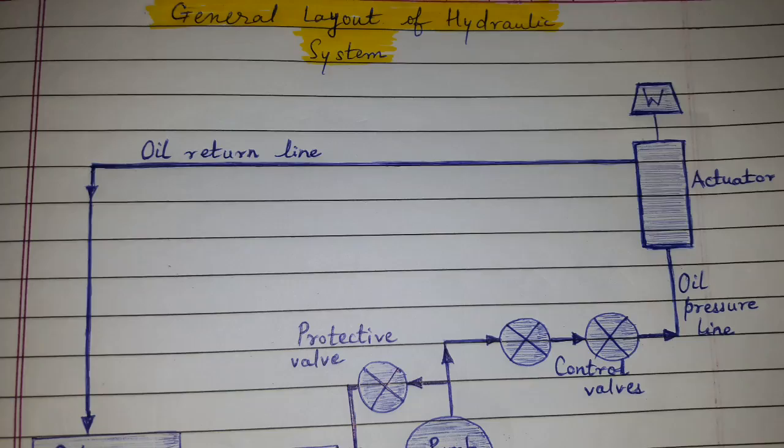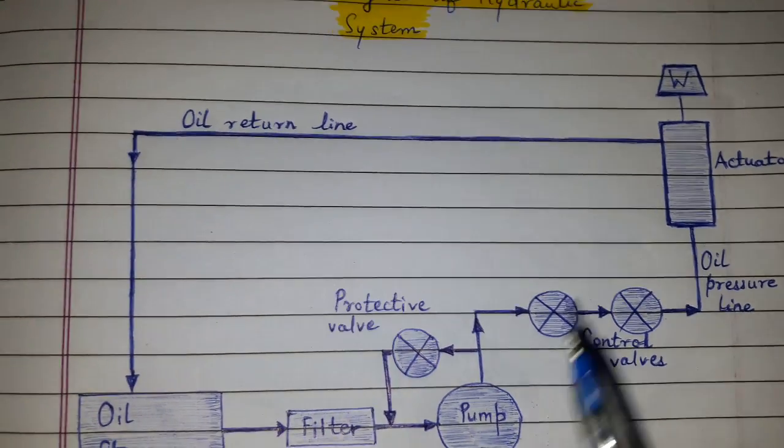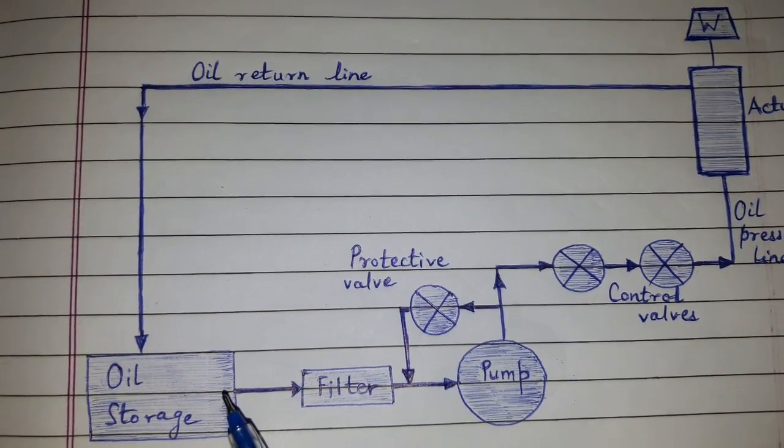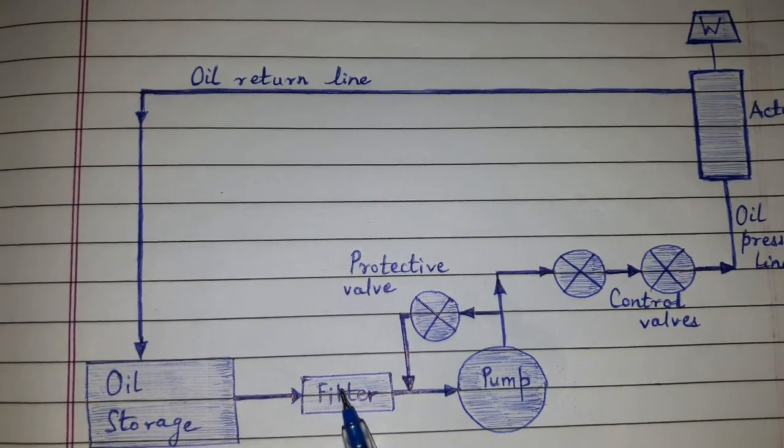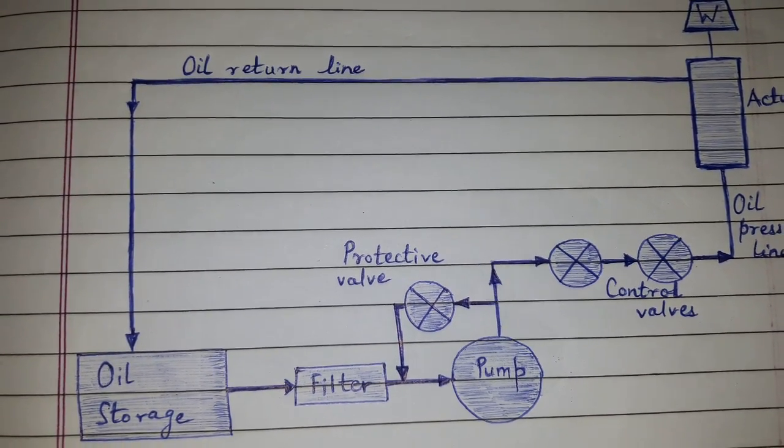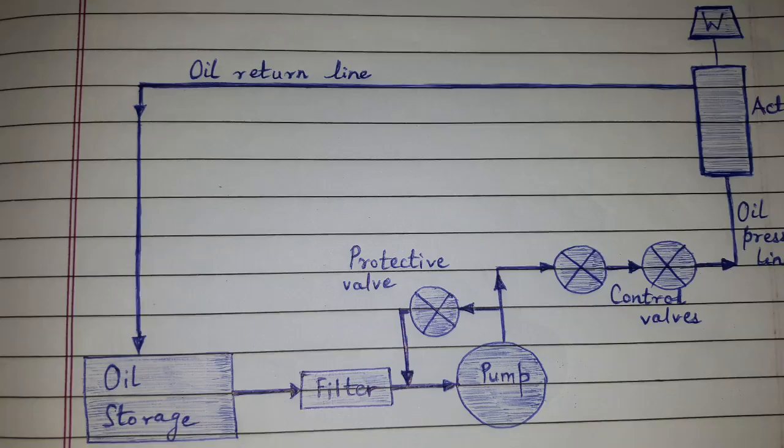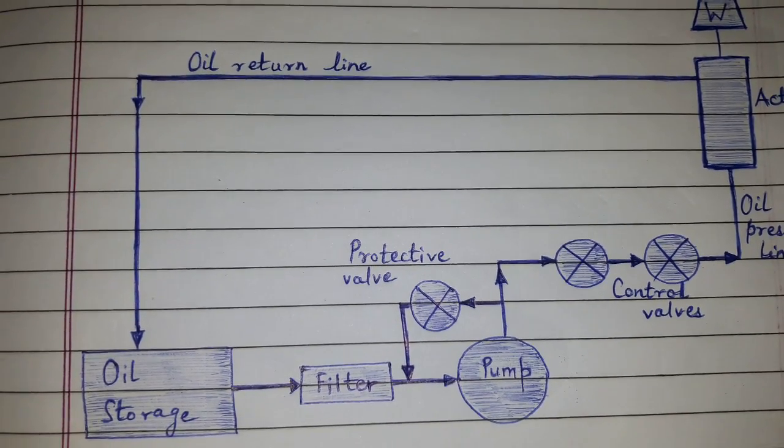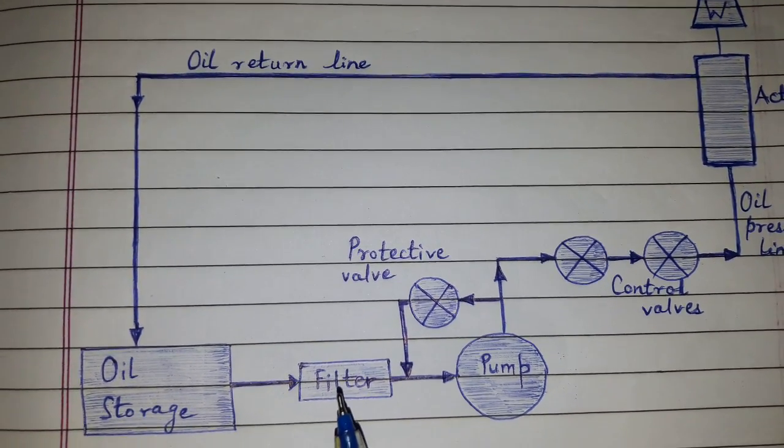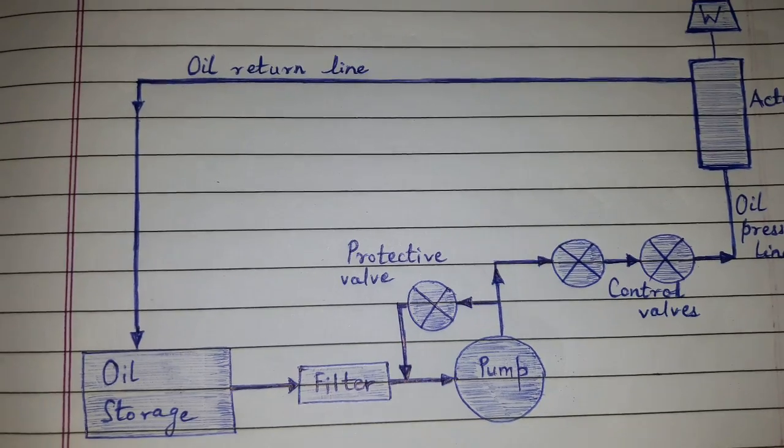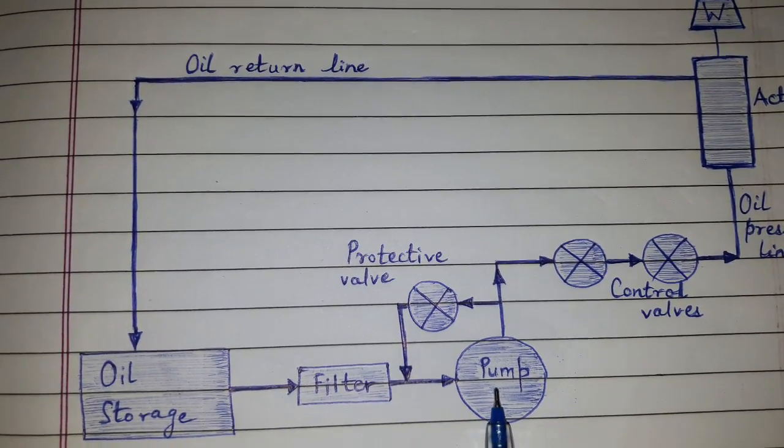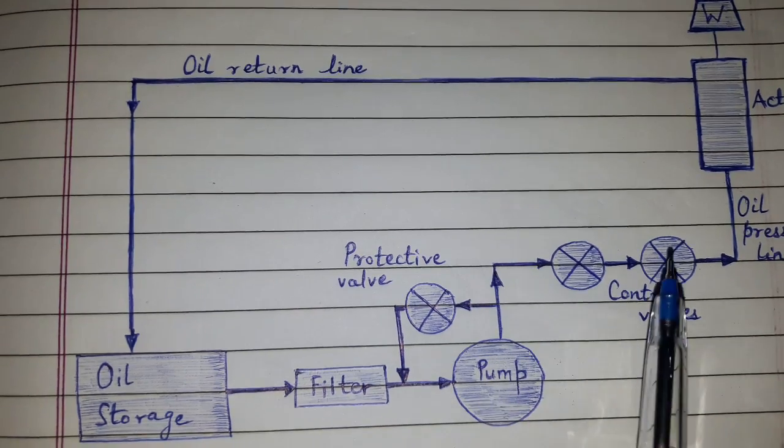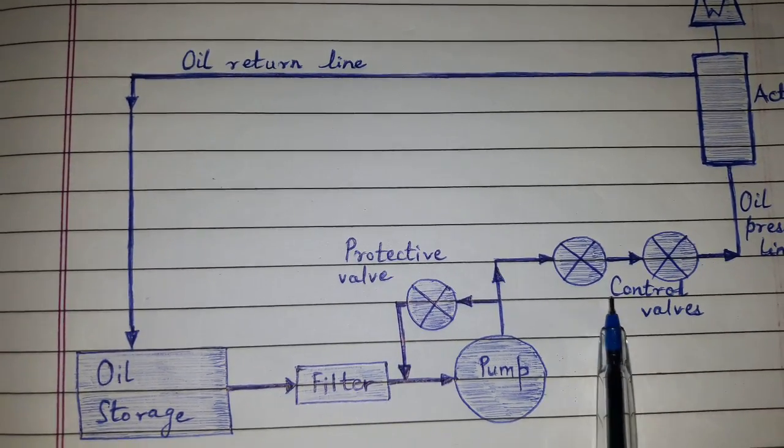The system has the following components: oil storage tank or oil reservoir, oil conditioning elements such as filter, heat exchanger, heater, and strainer. Here only the filter is shown for simplification. Next is the pump to pressurize oil, and fluid controlling elements such as directional control valves.